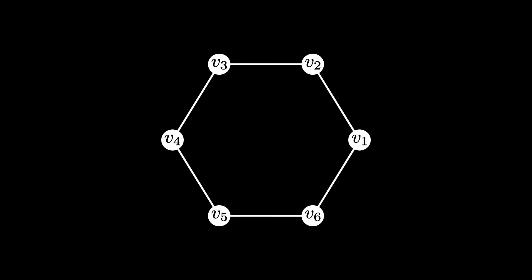Suppose we have the following cycle graph. Notice that these two vertices are connected by an edge. We say, by definition, that they are adjacent.